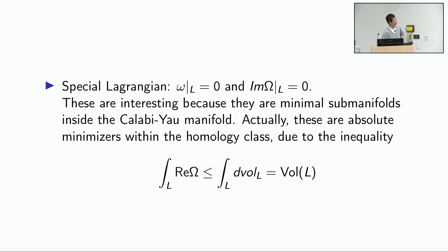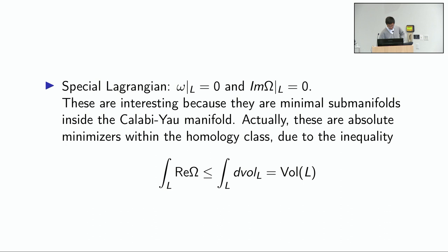One reason these things are interesting is because they are minimal submanifolds inside the Calabi-Yau — in fact much stronger, they are absolute volume minimizers within the homology class. The reason is calibrated geometry. Suppose you have any other submanifold L in the same homology class. There's a purely linear algebraic fact that pointwise the real part of the holomorphic volume form is bounded by the volume element of the submanifold. Integrating this gives a lower bound on the volume, which is topological since the real part of omega is a closed form. If you are special Lagrangian you saturate this inequality, proving these are absolute volume minimizers.